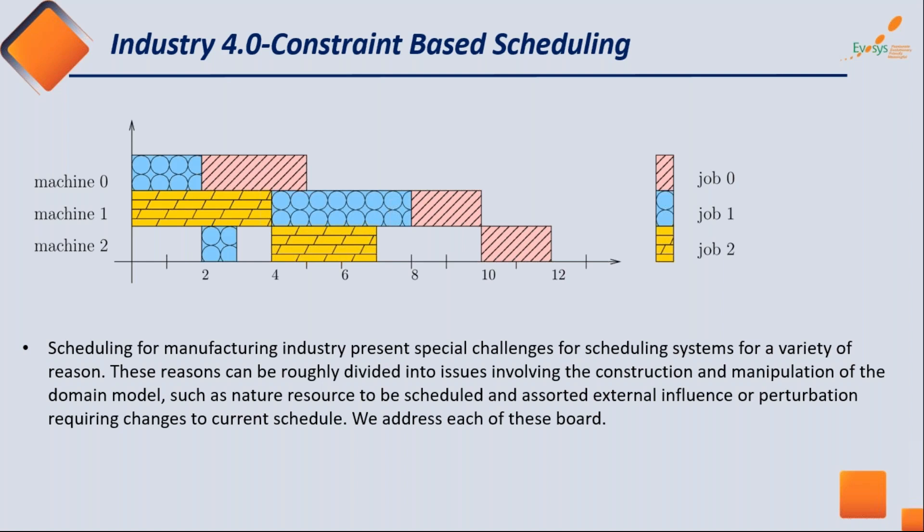Scheduling is a common practice widely used in manufacturing, and because of that there are specific problem statements identified. Taking a very simple example on screen: there are three machines (machine 1, 2, and 3) and three jobs to be performed.